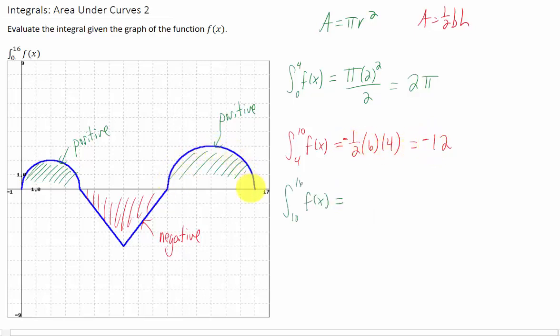Last, we have a slightly bigger semicircle. It has a radius of 3, so the area of that semicircle is going to be 9 pi over 2.